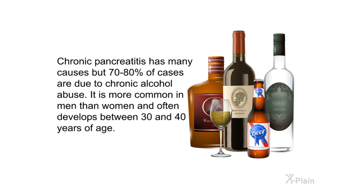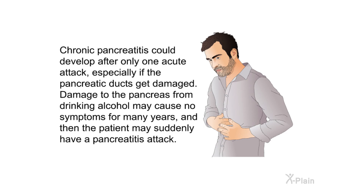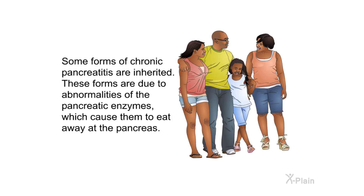Chronic pancreatitis has many causes, but 70 to 80 percent of cases are due to chronic alcohol abuse. It is more common in men than women and often develops between 30 and 40 years of age. It can develop after only one acute attack, especially if the pancreatic ducts are damaged. Alcohol-related damage may cause no symptoms for many years before the patient suddenly has an attack. Some forms of chronic pancreatitis are inherited, due to abnormalities of the pancreatic enzymes that cause them to eat away at the pancreas.